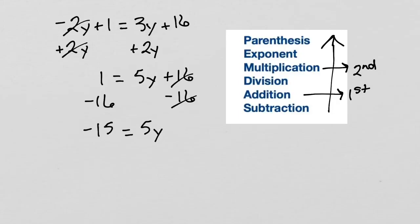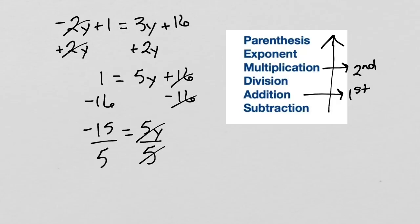Next, we will get rid of the multiplication by 5. We do this by performing the opposite operation on both sides, so we will divide both sides by 5. The 5 will cancel out. Negative 15 divided by 5 is negative 3. Therefore, y equals negative 3.